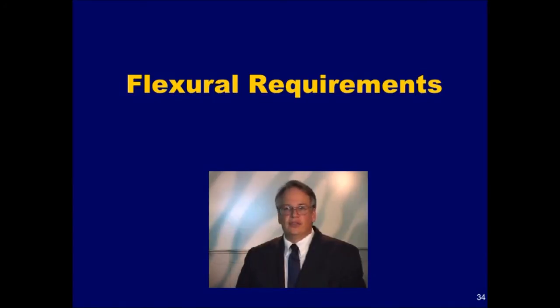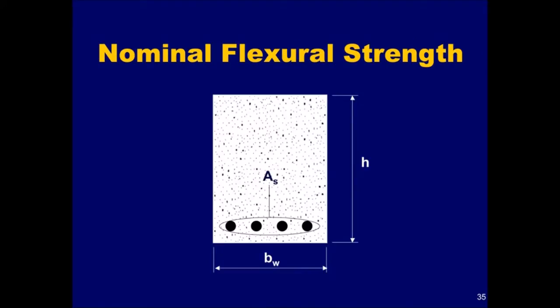Let's now move on to the flexural design requirements of ACI 318-05 as they pertain to cast-in-place non-pre-stressed concrete beams and one-way slabs. Our goal in this section is to determine the cross-sectional dimensions and the amount of reinforcement that is required when a concrete beam or one-way slab is subjected to bending moments. In order to determine these quantities, it is important to establish the equations that define the nominal flexural strength of the cross-section.